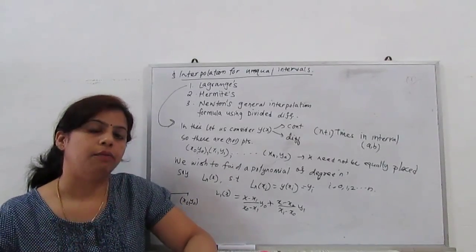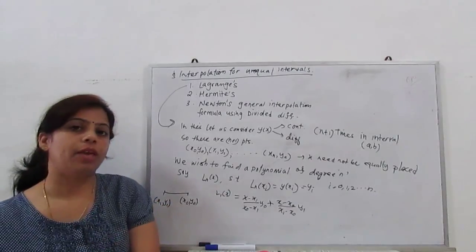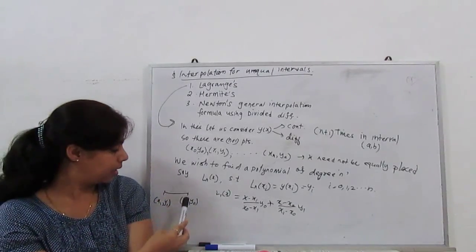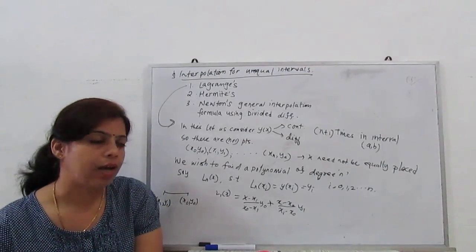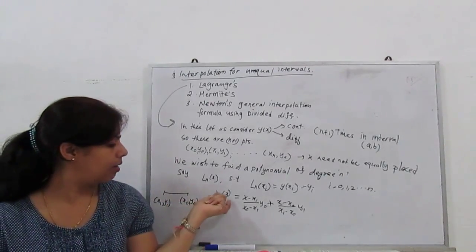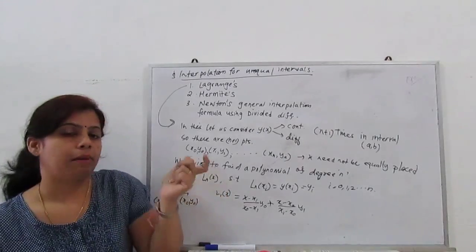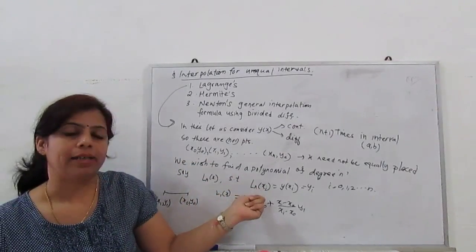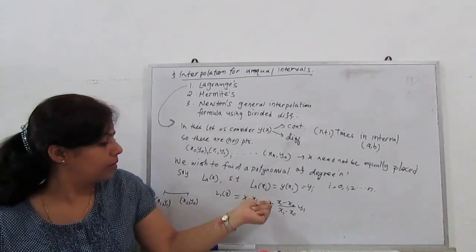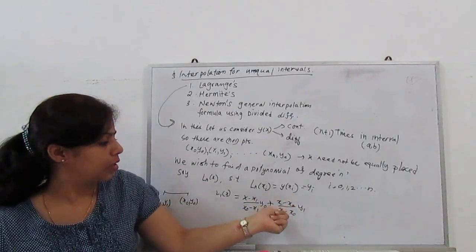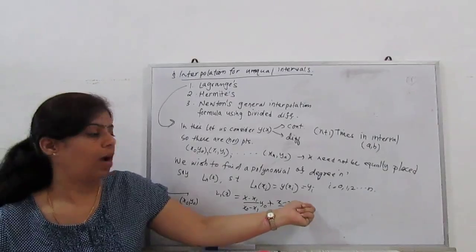For first degree, we have only two points, a straight line x0,y0, x1,y1. Then our equation of line L1(x) is given by (x-x1)/(x0-x1) times y0 plus (x-x0)/(x1-x0) times y1.